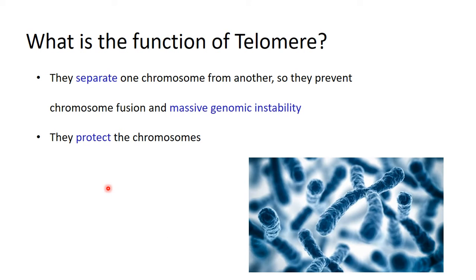What's the function of the telomere? Why does the telomere exist? The telomere exists at the end of each chromosome in order to separate the chromosomes from each other and to prevent fusion between chromosomes. If telomere does not exist, then there will be massive genomic instability.